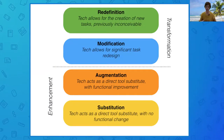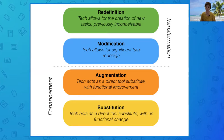Here's what the model looks like. If we start at the bottom, that yellow rectangle is the most simplistic level of the SAMR model. That's where the S comes from — substitution. This is when we take a digital tool and basically just use it as a substitute for a more traditional tool.